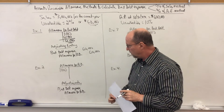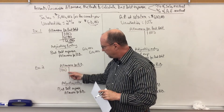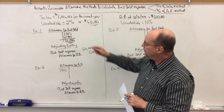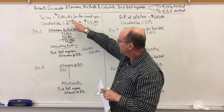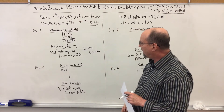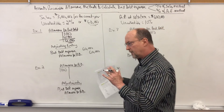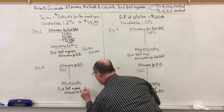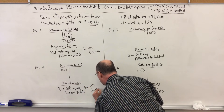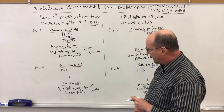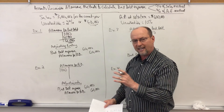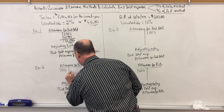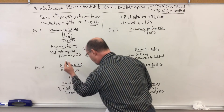In example two, the allowance has a debit balance before adjustment — this is that leftover or remaining balance. Again, we multiply sales times the two percent: sixty thousand dollars. Since we're focusing on the income statement, that's how much I think bad debt expense should be. My adjusting entry: debit bad debt expense, credit the allowance for bad debt. Remember, the allowance is a contra asset which has a normal credit balance. So I'm going to credit the allowance, just like in the first example.